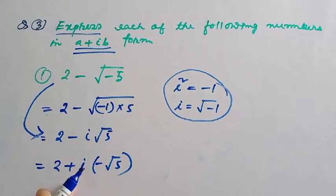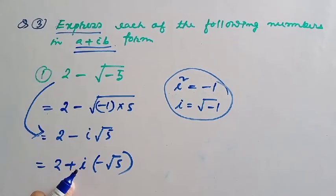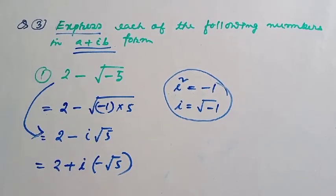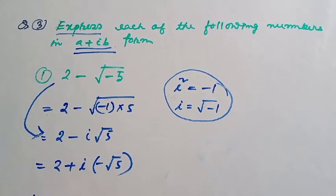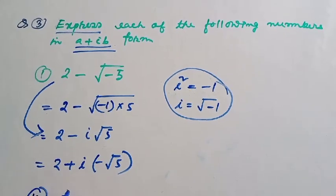We are expressing the number in a plus ib form. That is question number 1 done. Now question number 2.